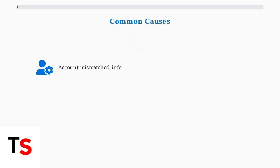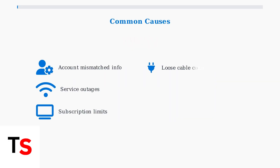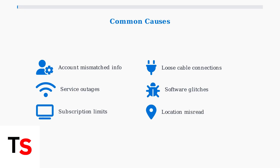The error typically stems from six main causes: account information mismatches, service outages in your area, trying to access content outside your subscription, loose cable connections, software glitches, or the app failing to recognize your home location.